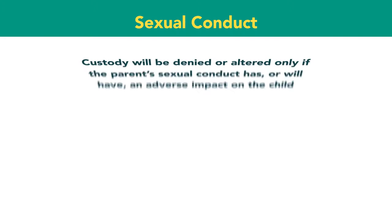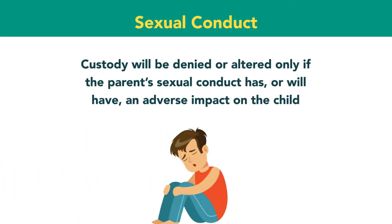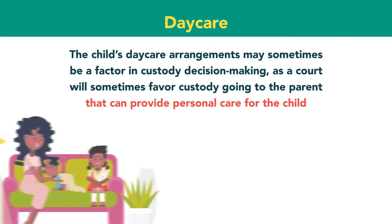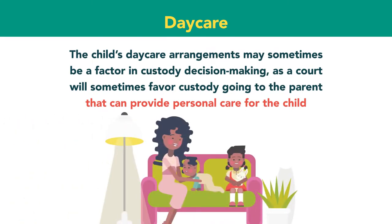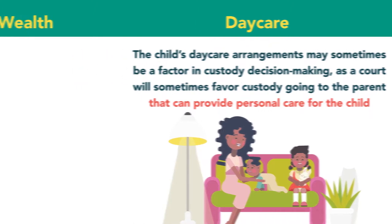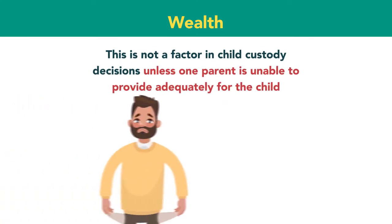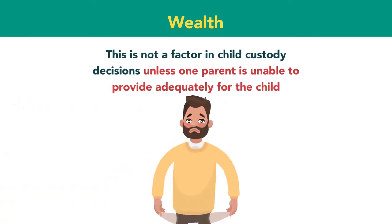The second category includes fitness circumstances. Custody will be denied or altered only if a parent's sexual conduct has or will have an adverse impact on the child. The child's daycare arrangements may sometimes be a factor, as courts may favor custody going to the parent that can provide personal care. Wealth is not a factor in child custody decisions unless one parent is unable to provide adequately for the child.